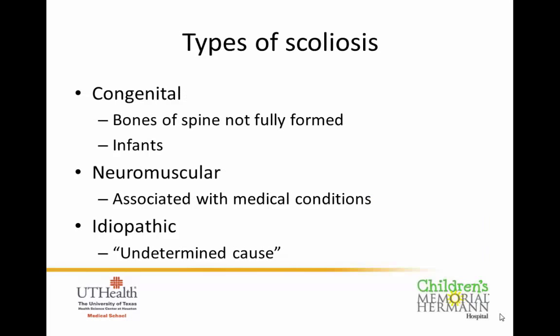There are several types of scoliosis. One type is congenital, in which the bones of the spine do not fully form or are fused together — this is from birth and is often recognized in infants. A second type is neuromuscular, associated with medical conditions such as cerebral palsy or Duchenne's muscular dystrophy. Today we're going to focus on idiopathic scoliosis.